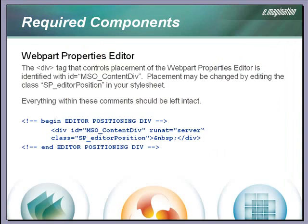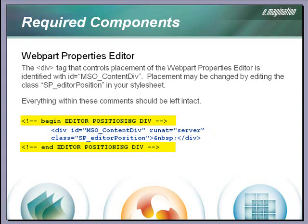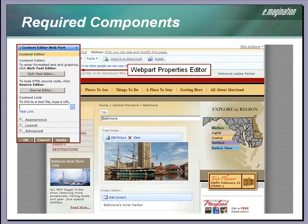The webpart properties editor positioning code is also a required component in our master page. It is simply a div tag that triggers where the webpart properties editor will appear in the browser when activated by a user. We have added a class name which corresponds to the positioning style in our base CSS file, and we have added comments around this area of the code. Here is a screenshot of the webpart properties editor as positioned with the code in our base master page and base CSS file.